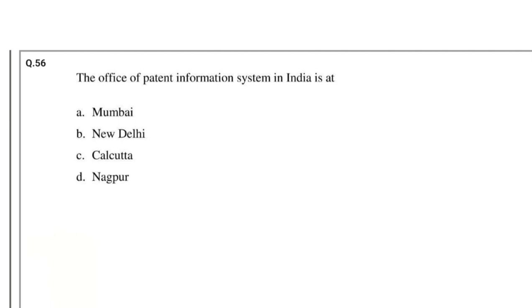Question number 56: The Office of Patent Information System in India is at — options: Mumbai, New Delhi, Kolkata, Nagpur. The answer is Nagpur.